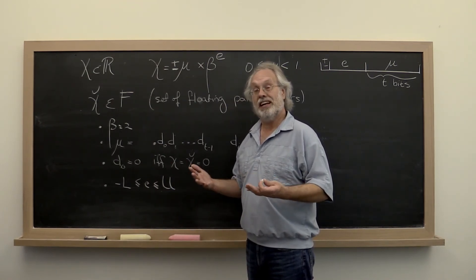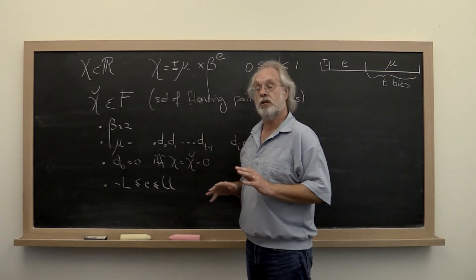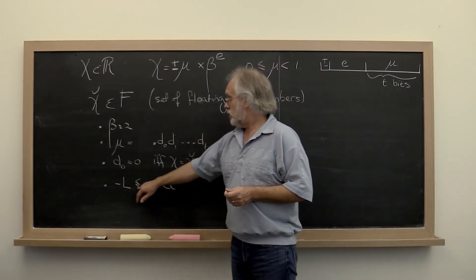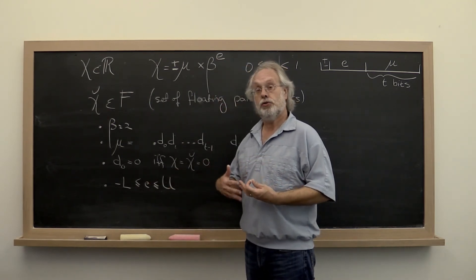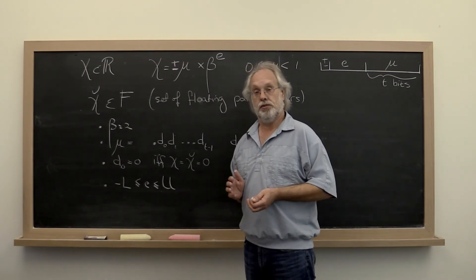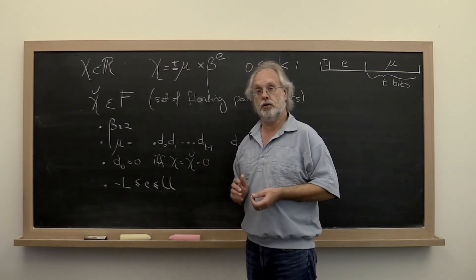And typically those are then stored as a special number that represents not a number. And there are numbers that are in magnitude too small to store. And those numbers typically are rounded down to 0, although sometimes you can control that.